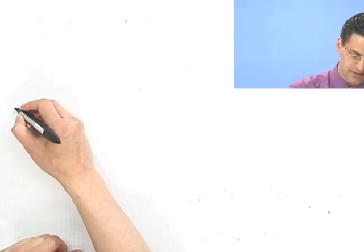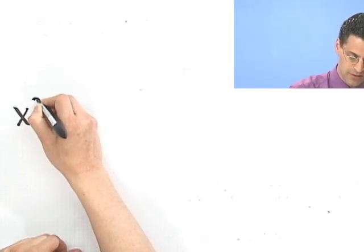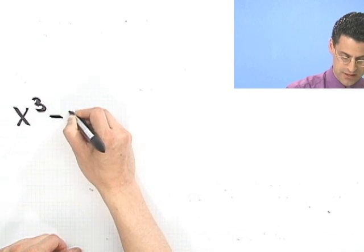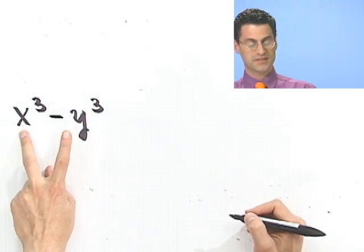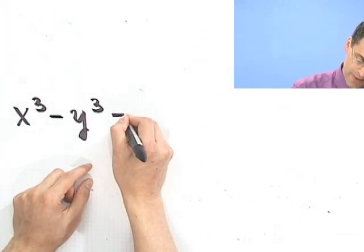I'm going to write down the factorization, and then I'm going to try to convince you that the factorization is correct and where it all comes from. So suppose you have the difference of two perfect cubes, x cubed minus y cubed. How would you factor that?